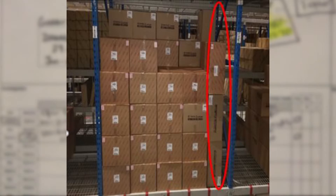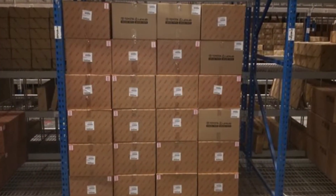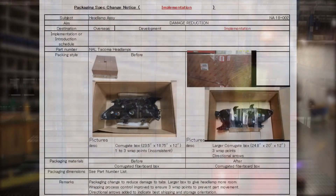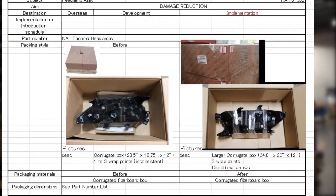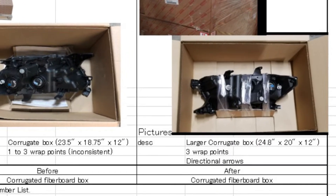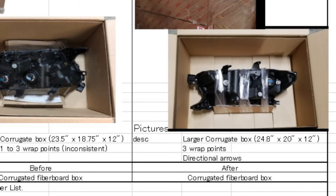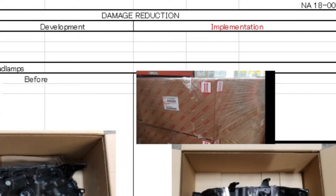We also discovered that in Home Position D, the parts were not being stored with directional arrows up. Countermeasures: we reduced the number of parts in the location to assure the directional arrows were followed. We verified there was a packaging change to reduce the damage. The packaging was changed to a larger box to give headlamps more room. The wrapping process improved to ensure three wrap points to prevent part movement. Directional arrows were added to indicate best shipping and storage orientation.